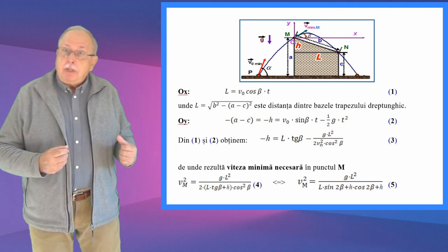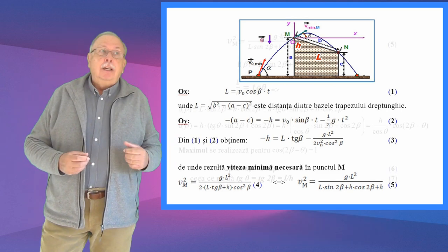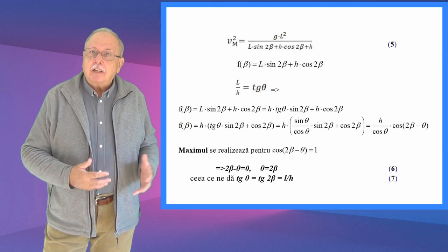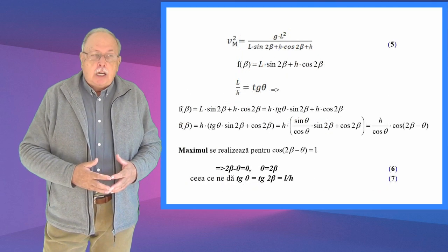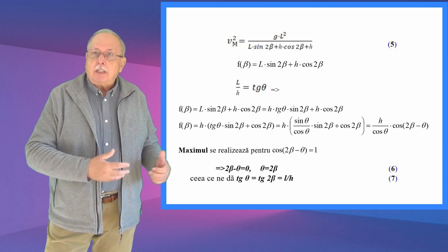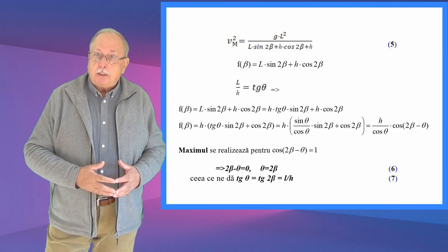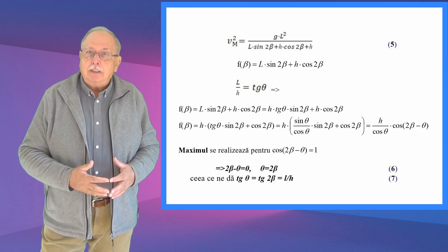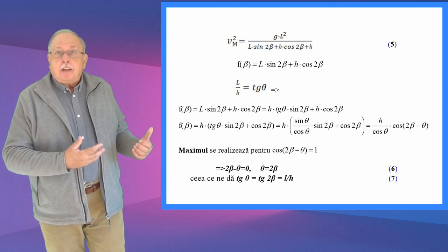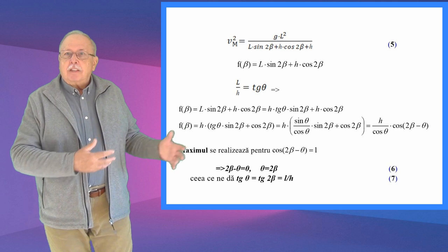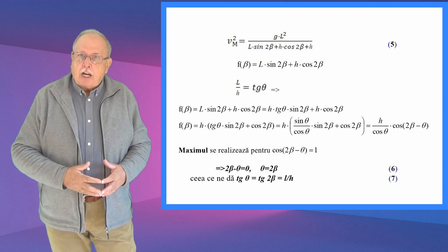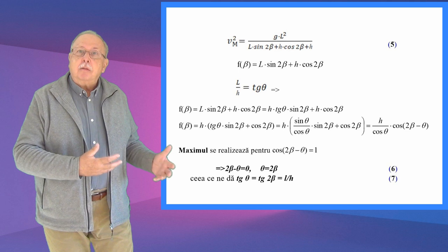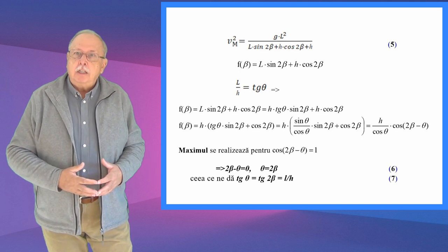Viteza în punctul M este minimă atunci când numitorul acestei fracții este maxim. Notăm L·sinus de 2beta plus H·cosinus de 2beta cu F(beta) — funcția de beta — și vrem să găsim maximul acestei funcții.